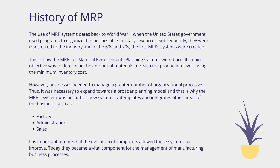The use of MRP systems dates back to World War II, when the United States government used programs to organize the logistics of its military resources. Subsequently, they were transferred to industry, and in the 60s and 70s, the first MRP systems were created. This is how MRP-1, or Material Requirements Planning Systems, were born. Its main objective was to determine the amount of materials to reach the production levels using the minimum inventory cost.